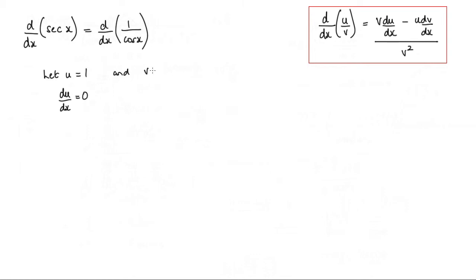And we can let v equal cos x. And when we differentiate cos x we get dv by dx would be minus sin x.